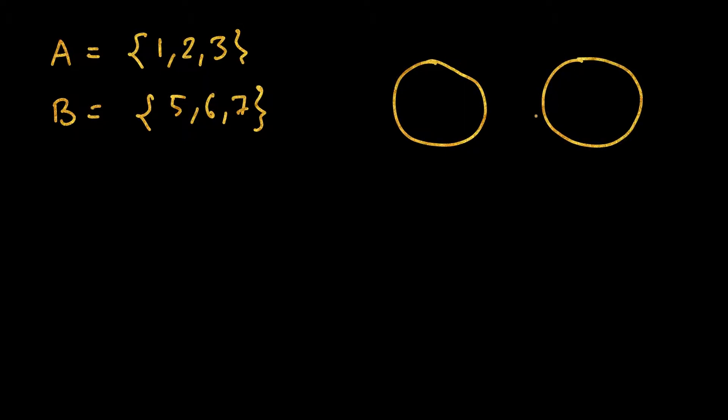Let's say we have two sets: A equals {1, 2, 3}, and set B which consists of {5, 6, 7}. If we have to represent this as a Venn diagram, we will draw two circles corresponding to the two sets. Then A has 1, 2, and 3, and B has 5, 6, and 7.